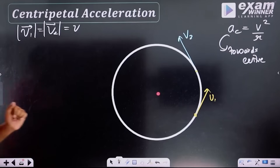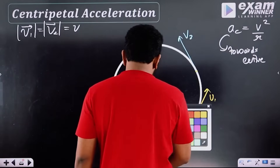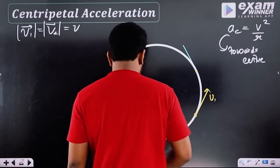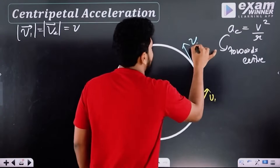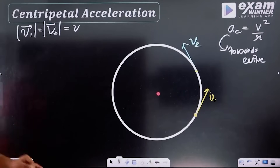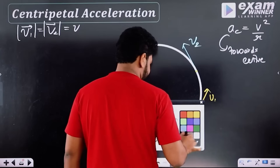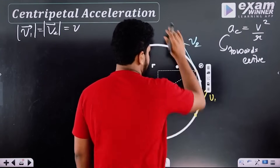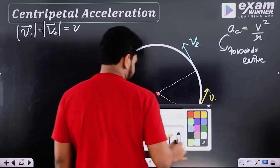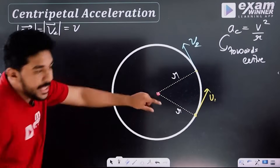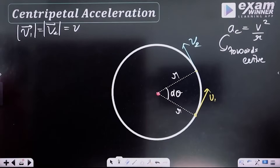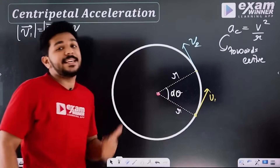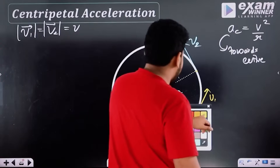We need to have a line in the same direction. The length is in the same direction — they will just denote the length. We have two points of radius. This is the radius. This is the angular displacement mark — dθ. This is the velocity change — these are the two vectors.